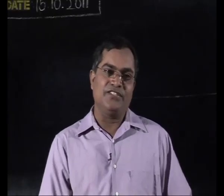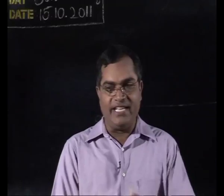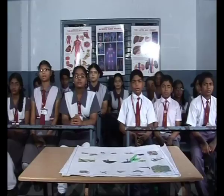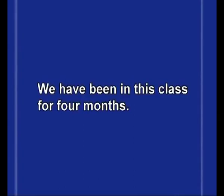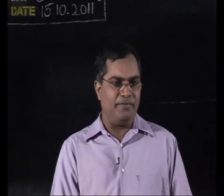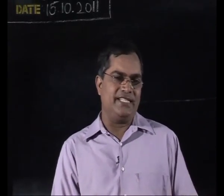You started learning English in class five and you are still learning. Use 'I have been learning' and say a sentence. We have been learning English for three years. Say the complete sentence. We have been in this class for four months. When did you come to this class? In June. That was in June, wasn't it? How long have you been in this class? We have been in this class for four months. If you want to say about the month of joining, you use 'since'. You say you have been in this class since June. We have been in this class since June.